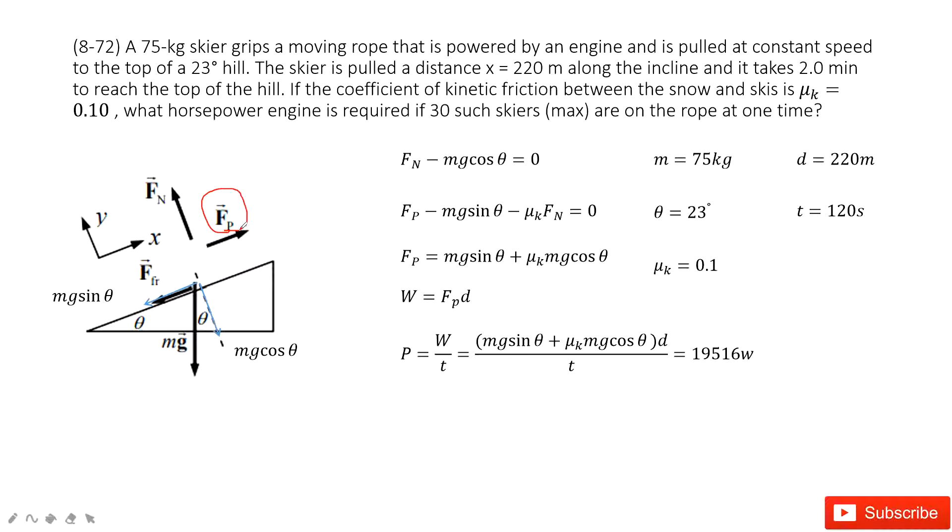And then we need to find the power for this machine. How can we do that? What are the known quantities? The mass of this person is given, angle theta is given, the friction is given, and also the distance d is given, the distance this person moved, and the time t is given.